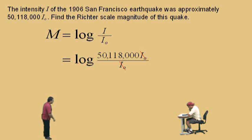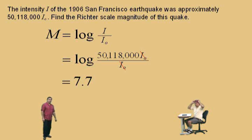With that said, just take your calculator out. This is a log base 10, you put it in your calculator, and what do you get? 7.7. That's right, 7.7. So it was a 7.7 magnitude earthquake on the Richter scale.